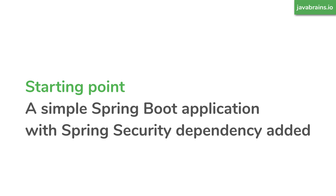The starting point for this video is a simple Spring Boot application with the Spring Security starter dependency added. When you add the Spring Security starter dependency, Spring Security creates a default user and puts your application behind form-based authentication. You can configure what the default user is in the properties file, but that's not ideal for most situations — you want authentication to happen based on a bunch of users, maybe in a database or some other external state. In this video, we are going to configure this by hard coding a couple of users and saving them in memory.